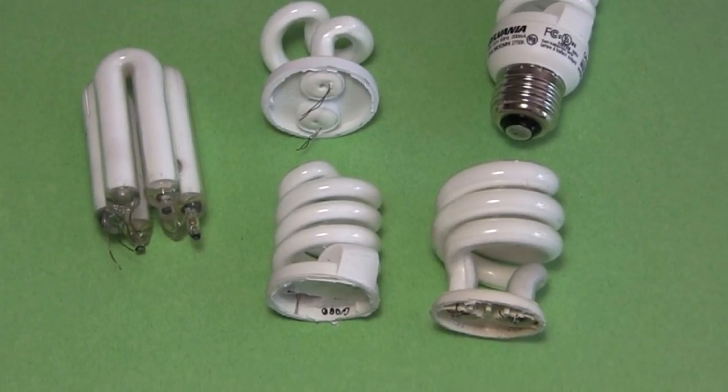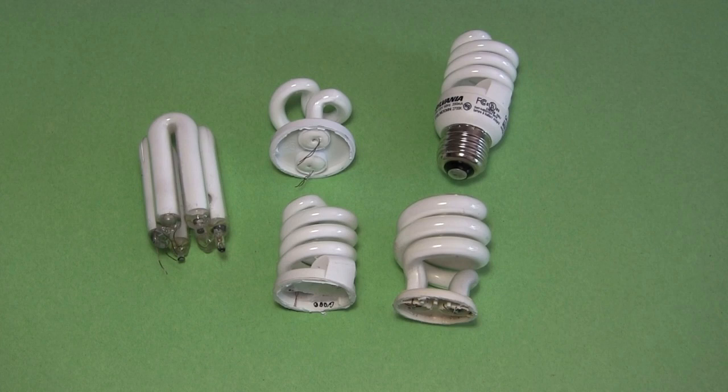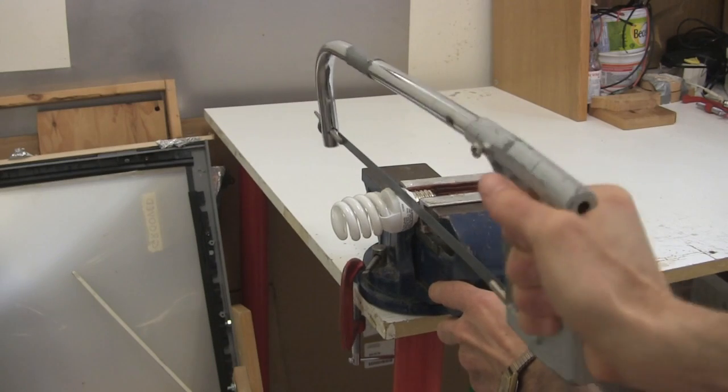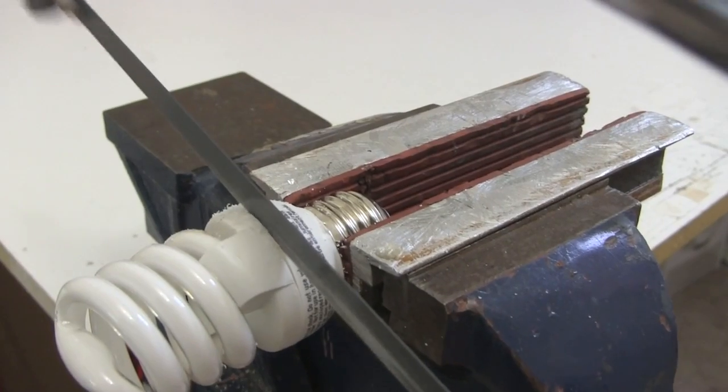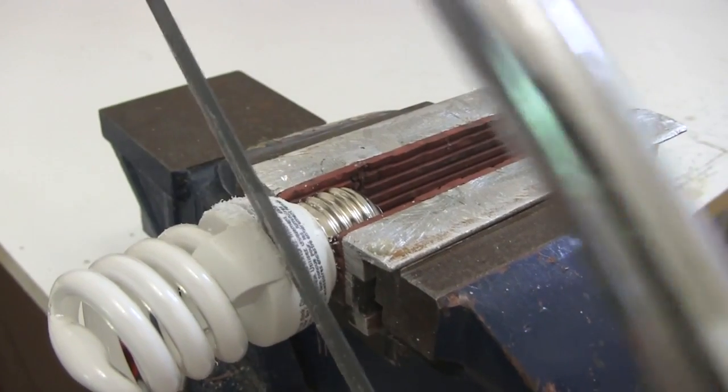First, I need just the tube from a CFL. Here are some that I've taken apart. Sometimes you can pry them open, but often you have to cut them open. Be careful not to cut too deeply and damage anything inside.